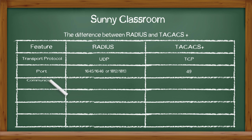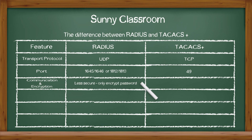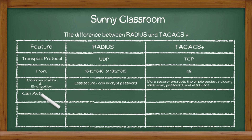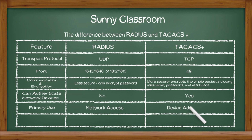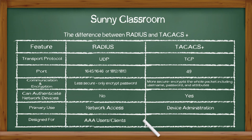In terms of communication and encryption, RADIUS is less secure — only the password is encrypted. TACACS+ is more secure; it encrypts the whole packet. RADIUS cannot authenticate network devices, but TACACS+ can. The primary use of RADIUS is for remote users to access the network, while TACACS+ is used primarily for device administration. Therefore, RADIUS is for AAA users, while TACACS+ is for AAA administrators.